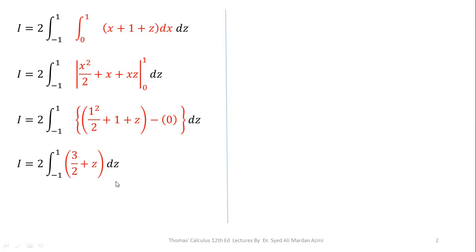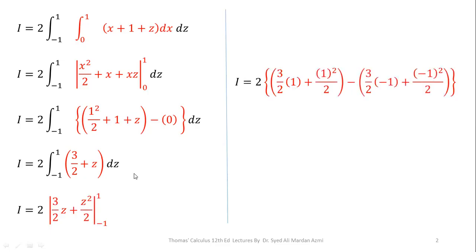We will now perform integration with respect to z. The integration of 3 over 2 is (3/2)z and the integration of z is z squared over 2, for the limits minus 1 to 1. Applying the limits — upper limit minus lower limit — we replace z with 1 and then with minus 1. After simplification, we get 2 times 2 plus 1, which equals 2 times 3, giving a final answer of 6.